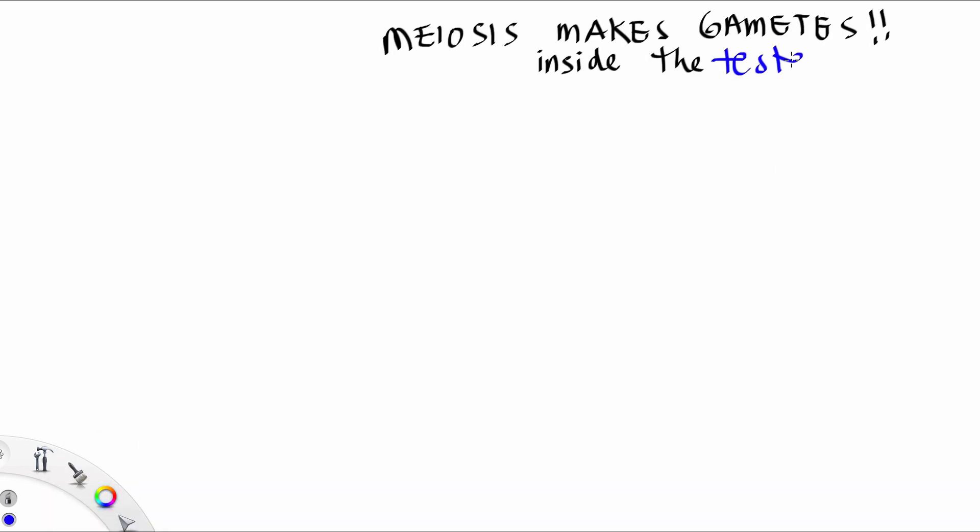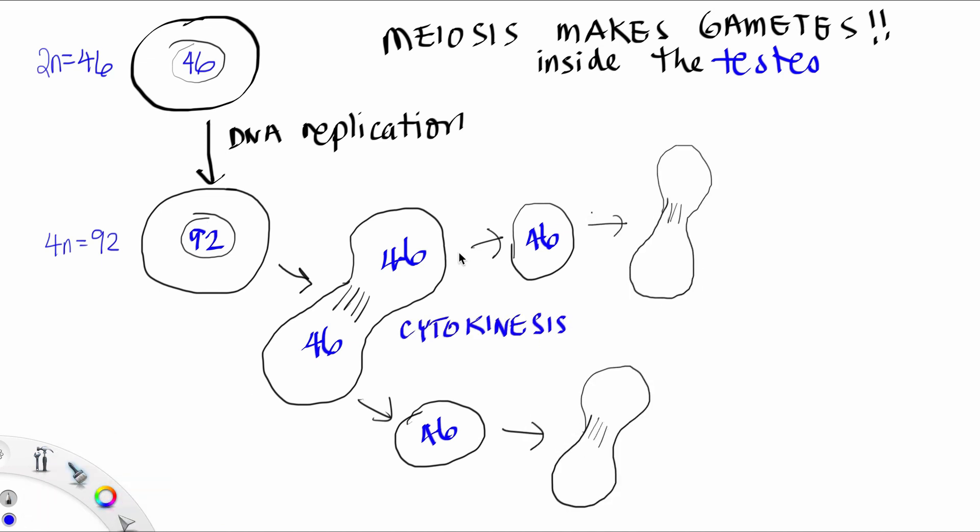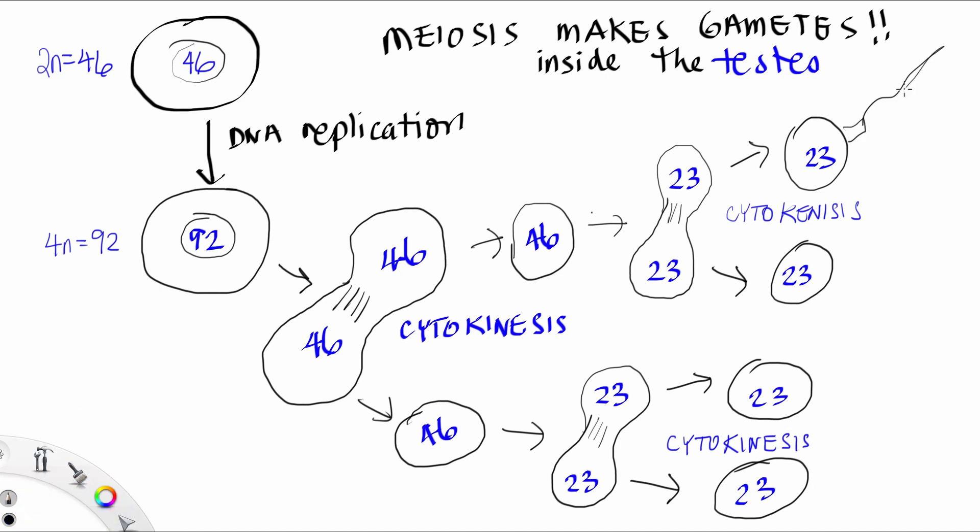Meiosis is responsible for making the gametes. So inside the testes, you get DNA replication. And instead of just dividing once, such as in mitosis, we actually divide a second time. And after you divide a second time, you get four haploid cells. Each of these haploid cells can become sperm.